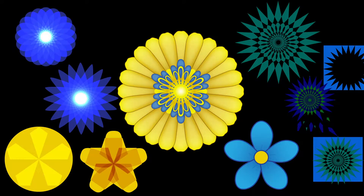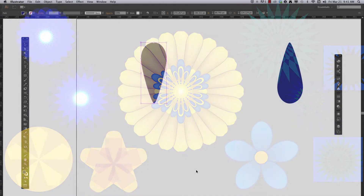This is part two of making circular designs with Adobe Illustrator. At the end of part one I said I was going to break this lesson up into two parts, but after reviewing all the things I want to do, I think I'm going to break it up into even more parts.